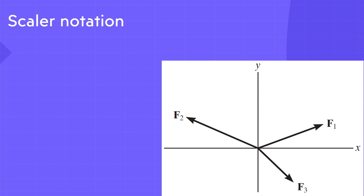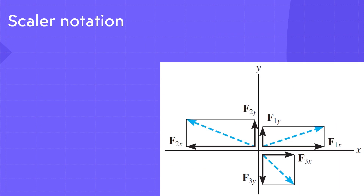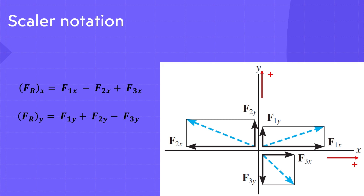Consider the three concurrent forces in this figure, which have x and y components as shown. The positive x direction points to the right and the positive y direction points up. So, FRx equals F1x minus F2x plus F3x, and FRy equals F1y plus F2y minus F3y.